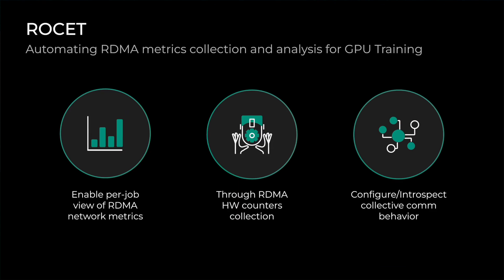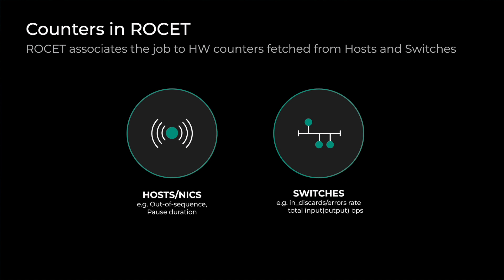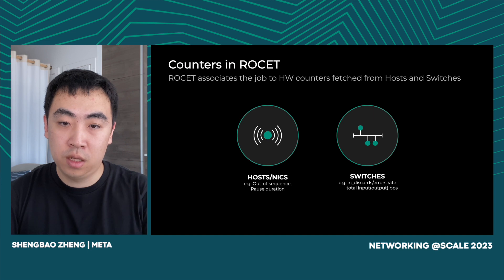ROCKIT is a tool that enables a per-drop view of RDMA network through RDMA hardware counters collection. These metrics can help configure and introspect collective communication behavior across the network switches, NICs, PCIe switches, and GPUs. ROCKIT associates the job to hardware counters fetched from the host and switches. On the host, ROCKIT will collect counters like out-of-sequence rate to measure error impact and pulse duration rate to measure network congestion. On the switches, ROCKIT will collect both error counters like in-discard rate and informative counters like total input BPS.